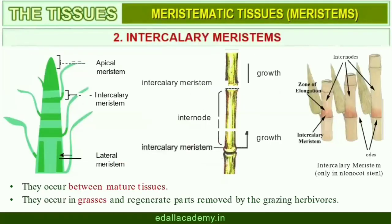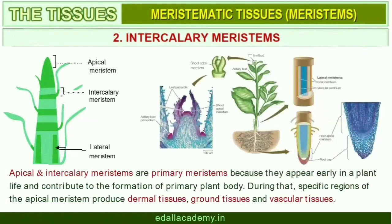The meristem which occurs between mature tissues is known as intercalary meristem. They occur in grasses and regenerate parts removed by grazing herbivores. Both apical meristems and intercalary meristems are primary meristems because they appear early in the life of a plant and contribute to the formation of the primary plant body.